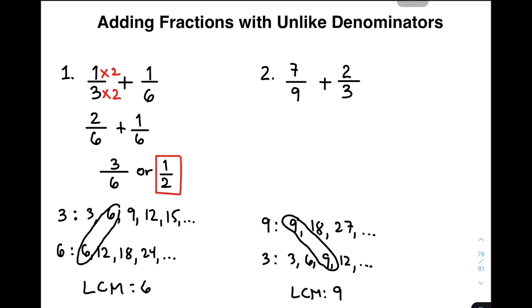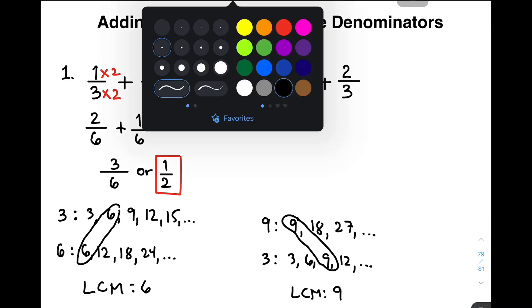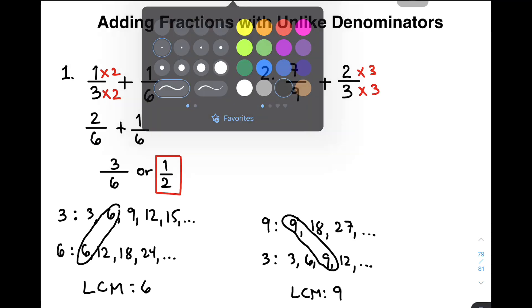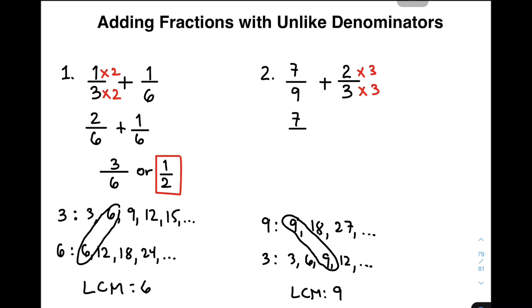Now, as you can see, you do not need to multiply 7/9 by a certain number because the denominator is already 9. So all we need to do is multiply the second fraction by a certain number, and this denominator should be multiplied by 3 to make it 9, and also your numerator by 3. Now, copying the first fraction, which is 7/9, plus 2 times 3, this is 6, over 3 times 3, that is equal to 9.